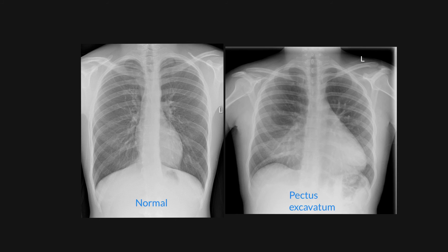This illustrates the normal film where you can clearly see the right heart border. In the patient with pectus, it is abnormal and hazy, and you can see that the orientation of the ribs is significantly different from that of a normal chest x-ray, or from a chest x-ray demonstrating right middle lobe collapse.